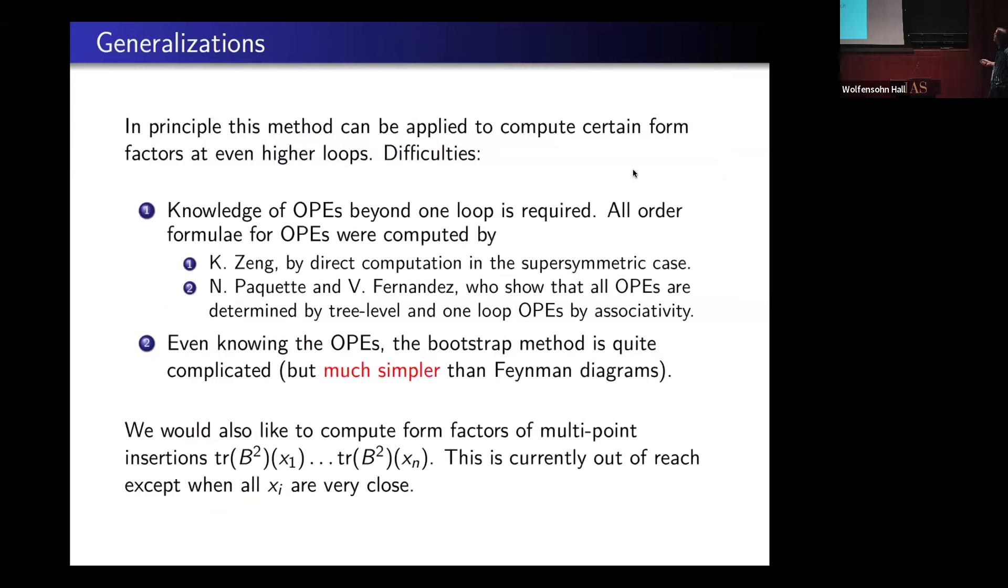I'm going to spend a little time on generalizations. One can try to go further. To go further, we need knowledge of OPEs beyond one loop. There's a lovely paper by Kuo Zeng, where he computes all of the OPEs in the supersymmetric case, just explicitly. There's some lovely formula in terms of Clebsch-Gordan coefficients. Then Paquette and Fernandez showed that they're all determined by associativity. However, even knowing the OPEs, the bootstrap method is quite reasonably complicated.